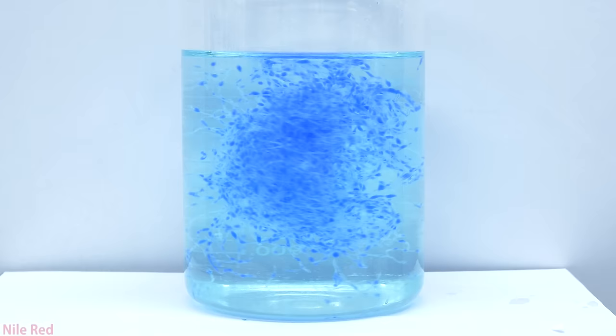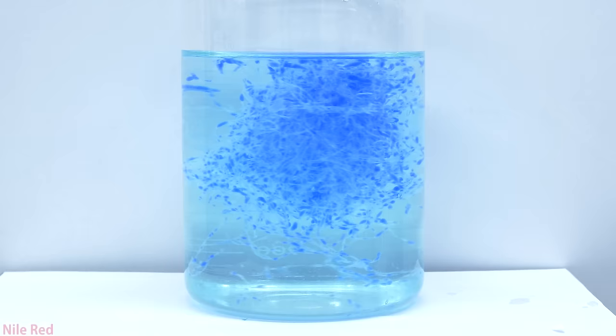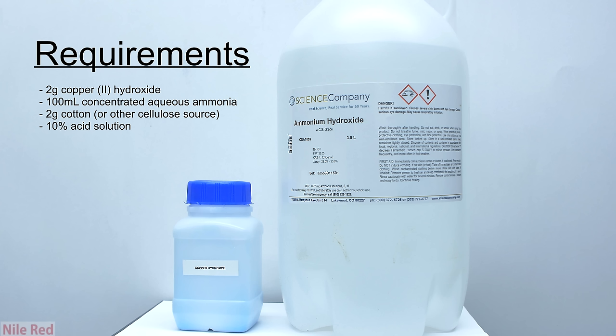Schweitzer's reagent is a complex that's formed between copper hydroxide and ammonia, and when this is in water, it's capable of dissolving cellulose. What we need to make this Schweitzer's reagent is copper hydroxide, which we made in a previous video, and aqueous ammonia, which is also known as ammonium hydroxide. One unfortunate thing is that I found it's really important to use concentrated ammonium hydroxide because dilute stuff that you can find as cleaner in stores just really doesn't work very well.